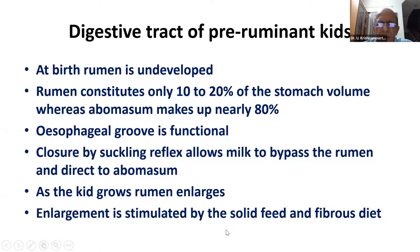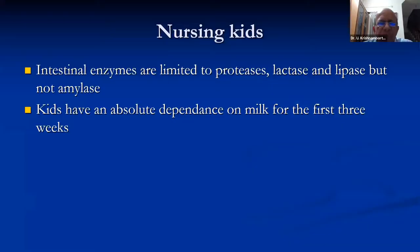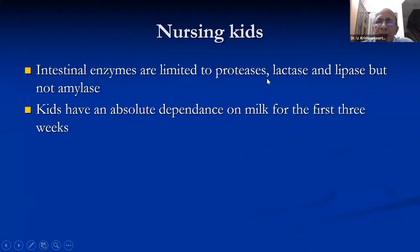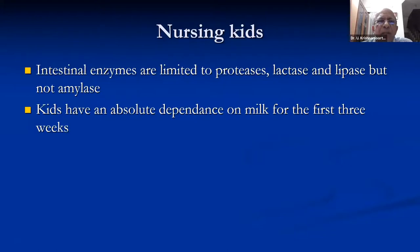As kids grow, the rumen enlarges — enlargement is stimulated by solid feed and fiber ingestion. Intestinal enzymes are also limited in the young during the milk period: protease, lactase, and lipase are active, but not amylase. Amylase secretion is inhibited by lactase during this period, and when lactase activity declines with decreased milk intake, amylase activity is enhanced in the intestine. Therefore in the early stages, if you allow too much starch in the creep feed it can lead to digestive problems and intestinal infections. Keep starch content low in creep feed within the first three weeks.